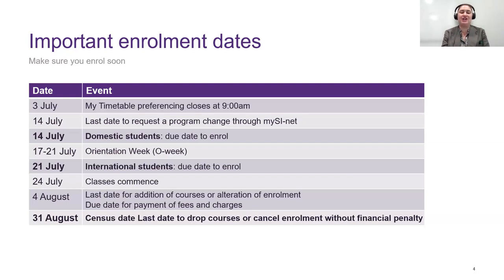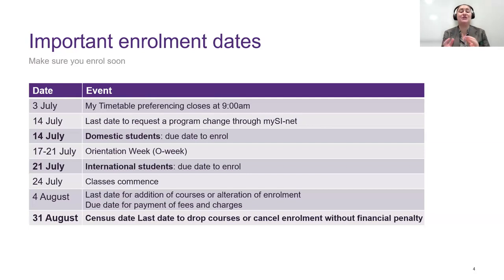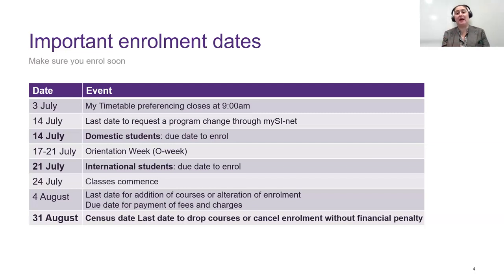The 17th to the 21st of July is Orientation Week, or O Week as Australians like to say — there'll be great events on campus, including science faculty-specific sessions. The 21st of July is also the international students' due date to enrol. Classes commence on the 24th of July, which is week one. The 4th of August is the last date for addition of courses or alteration of enrollment, and it's the due date for payment of fees. Census date is the 31st of August — this is the last date to drop courses or cancel enrollment without financial penalty. If you drop after that date, you will still have to pay for the course.